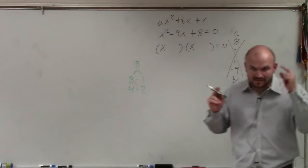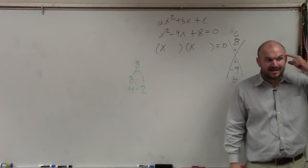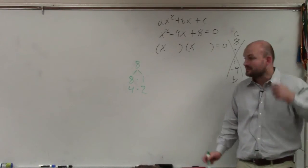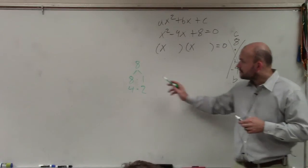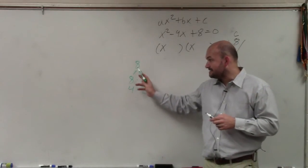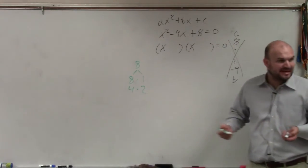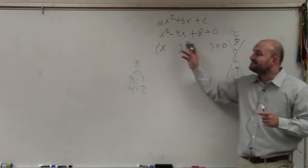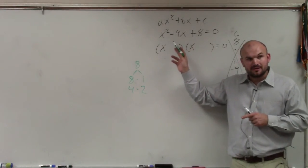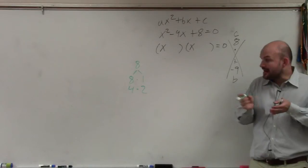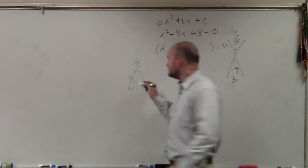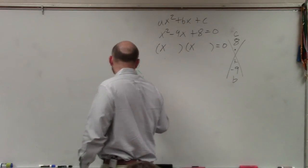And the reason why I want to write this out is because I want you guys to think, even when you're doing this in your head, this is what you're doing in your head. You're looking at what two numbers multiply to give me 8, which these are, but then add to give me negative 9. And remember, they have to add to give you a negative 9. So if they're adding to give you a negative 9, but multiplying to give you 8, then the factors all have to be negative.